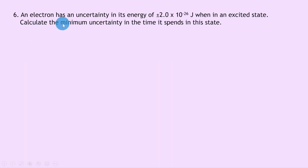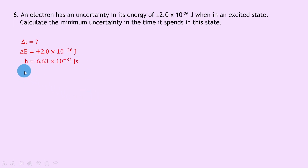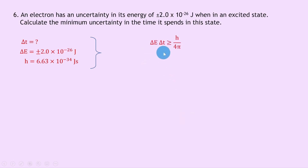Question 6 says an electron has an uncertainty in its energy of plus or minus 2.0 times 10 to the minus 26 joules when in an excited state. Calculate the minimum uncertainty in the time it spends in this state. We're trying to find the uncertainty in time. The uncertainty in energy is plus or minus 2.0 times 10 to the minus 26 joules, and Planck's constant h is 6.63 times 10 to the minus 34 joule seconds. Writing the equation: delta E times delta t is greater than or equal to h over 4 pi.